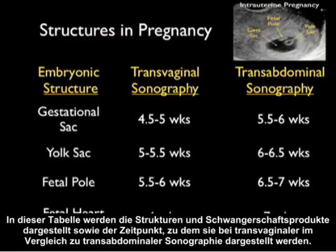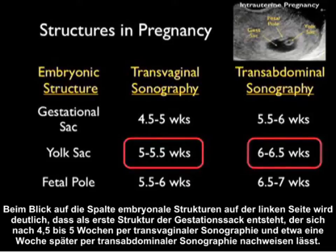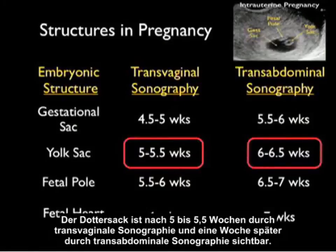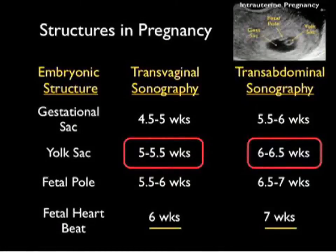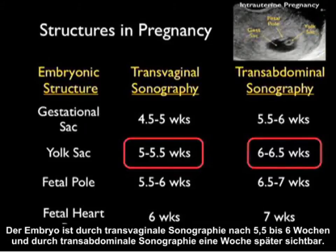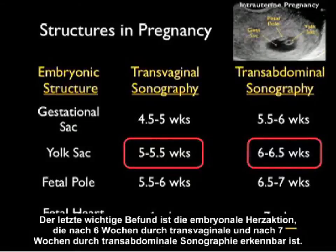Here's a table showing the structures in pregnancy and about the time they're seen on transvaginal versus transabdominal sonography. The first structure is the gestational sac, seen on transvaginal sonography at about 4.5 to 5 weeks and about a week later on transabdominal sonography. The yolk sac is seen at about 5 to 5.5 weeks on transvaginal sonography — circled in red as this is really how we diagnose an intrauterine pregnancy. The fetal pole is seen at about 5.5 to 6 weeks on transvaginal sonography and a week later on transabdominal. The fetal heartbeat is seen at about 6 weeks on transvaginal and about 7 weeks on transabdominal sonography.